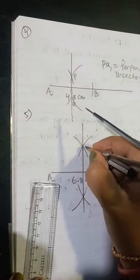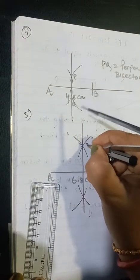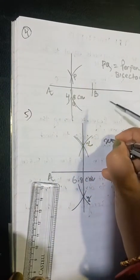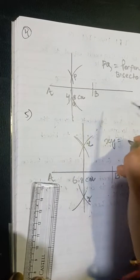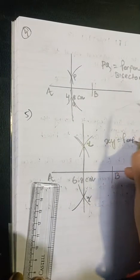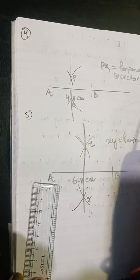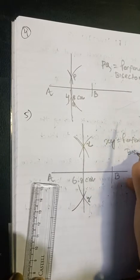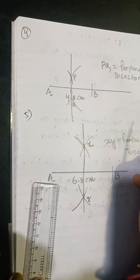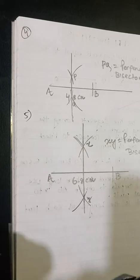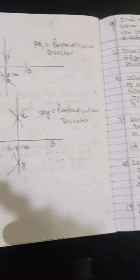Now label this X and Y. XY is the perpendicular bisector. This is the perpendicular bisector.